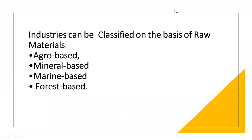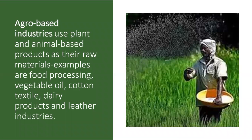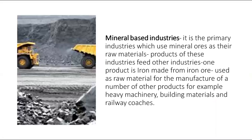Industries can be classified on the basis of raw materials — agro-based, mineral-based, marine-based and forest-based. Agro-based industries use plant and animal-based products as their raw material. Examples include food processing, vegetable oil, cotton textile, dairy products and the leather industry.